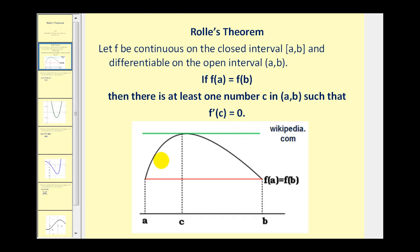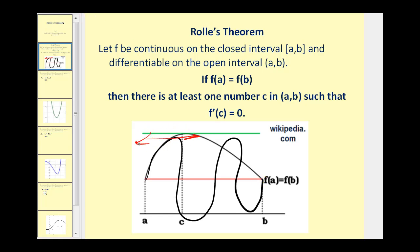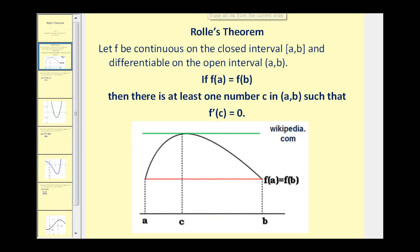If I were to sketch a different function, there would be more than one value of c because we'd have a horizontal tangent line at multiple points — here, here, here, here, and here. So there would be four values of c rather than just one. Hopefully when you take a look at this sketch, this idea makes sense that there's at least one value of c where the derivative would equal zero.